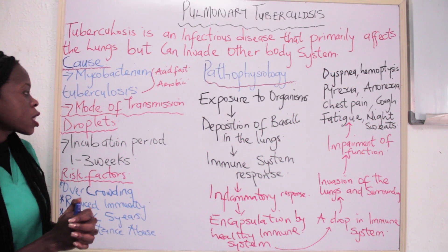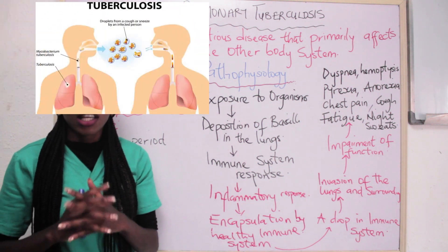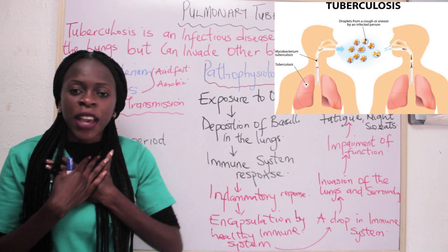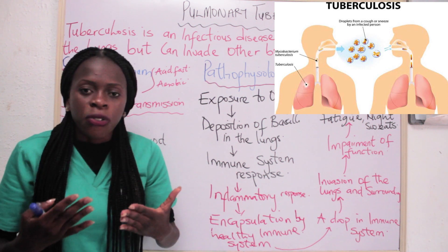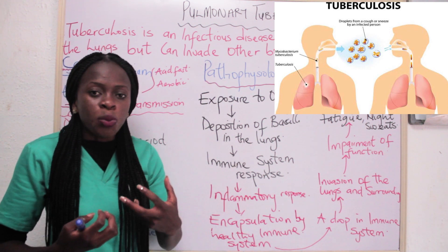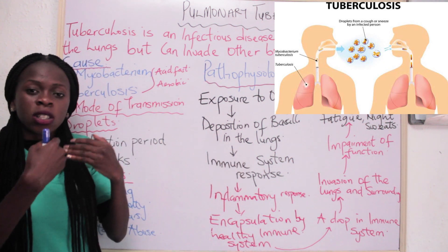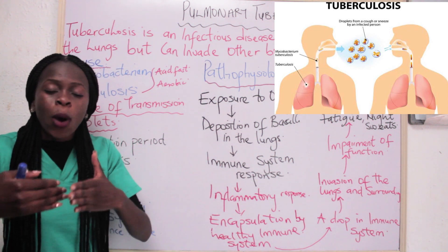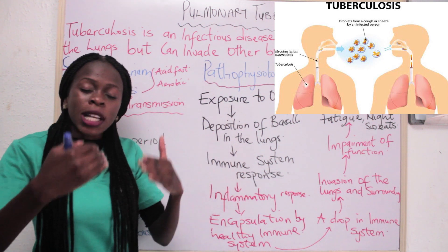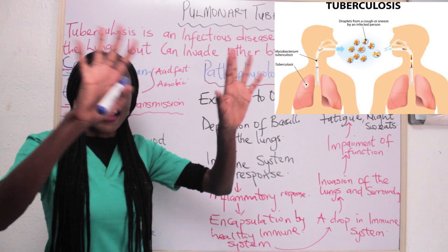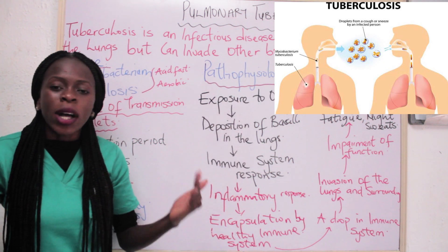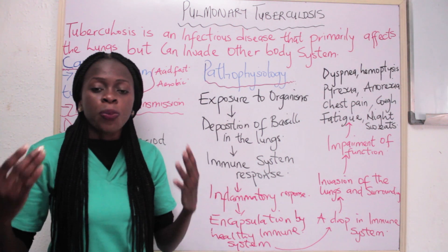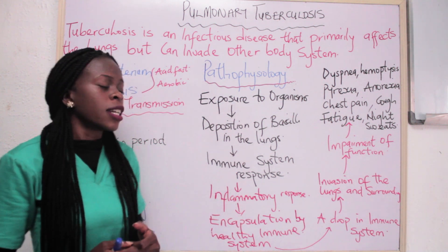The mode of transmission of pulmonary tuberculosis is through droplets. For example, if I am infected with pulmonary tuberculosis, whenever I cough or sneeze, somebody close to me is possibly going to inhale what I coughed or sneezed out. That is how pulmonary tuberculosis is transmitted from one person to another. That is why it is advisable for a nurse managing a patient with pulmonary tuberculosis to put on an N95 face mask.